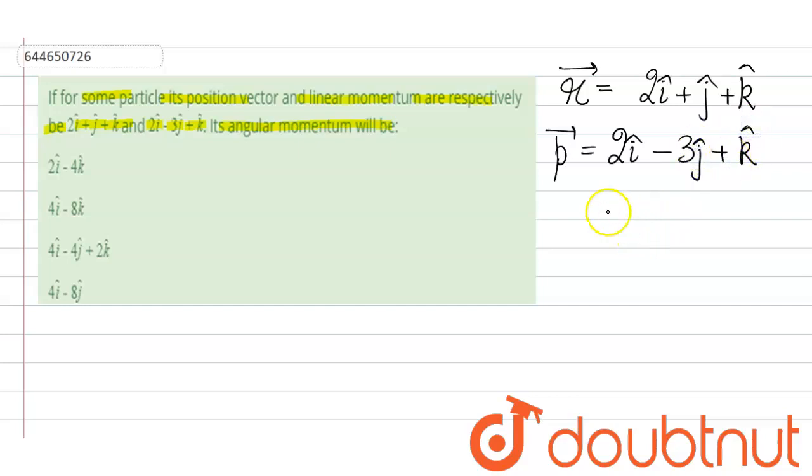And here we have to find angular momentum L. So L can be written as r cross p, the cross product. We use here determinant method.